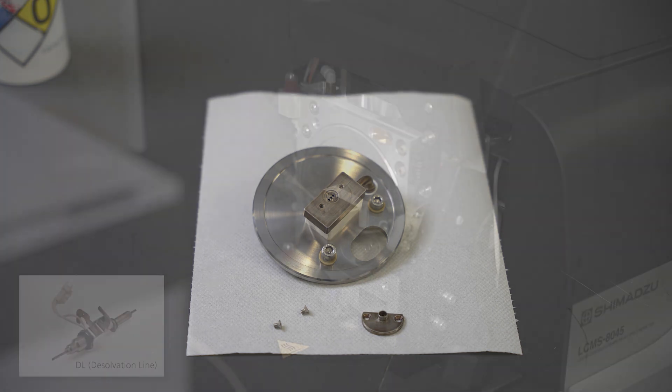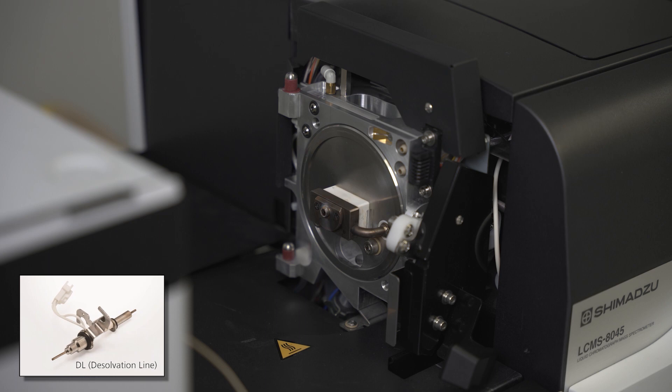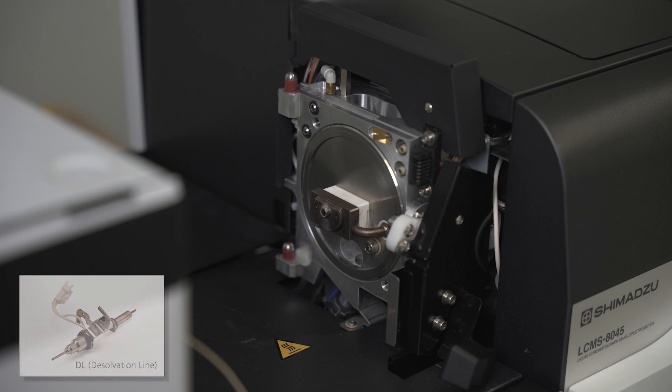Avoid cleaning the tip of the desolvation line, as this can cause a blockage of the tubing. If the tip of the DL is badly soiled, replace the DL.